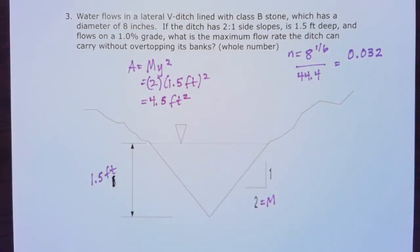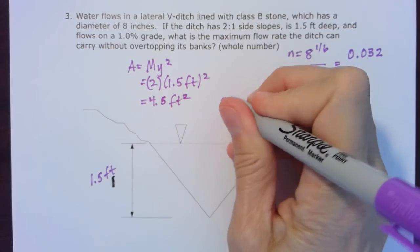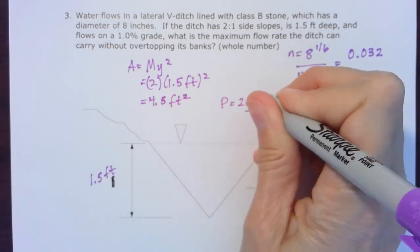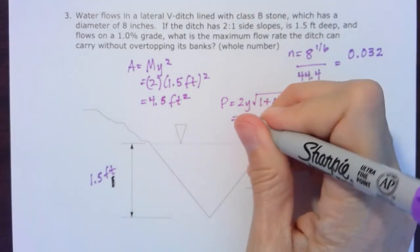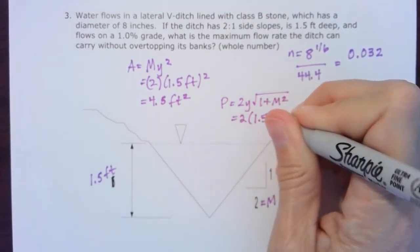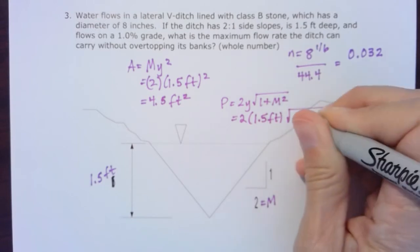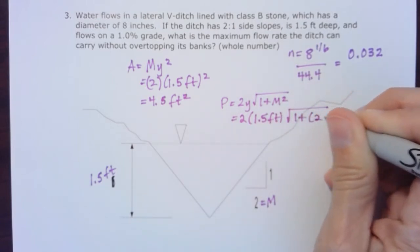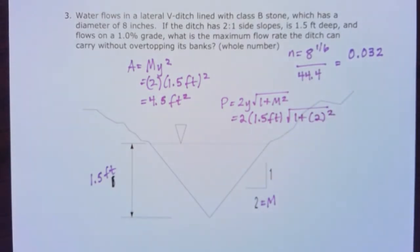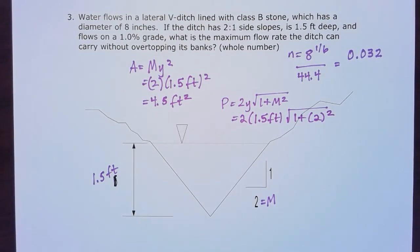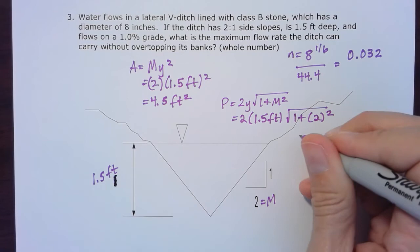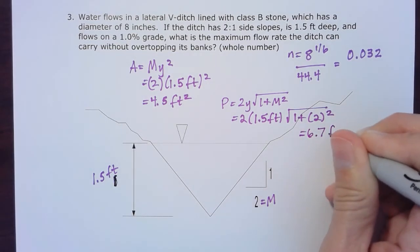For the perimeter, same thing—that B term drops out, so the perimeter becomes 2Y times the square root of one plus M squared. In this case, our Y is 1.5 feet, and then we have the square root of one plus two squared. Solving that for perimeter, we wind up with 6.7 feet for that wetted perimeter.